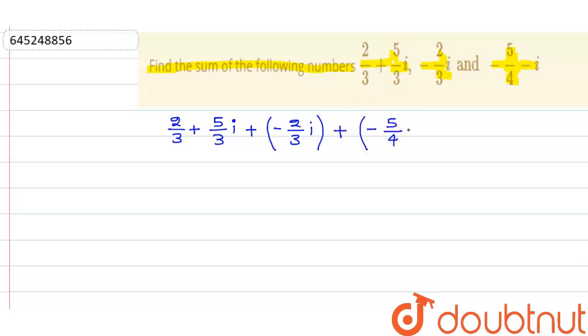Now add this thing. So this is what 2/3 plus take common iota. So this is what iota and this is what 5/3. This is what minus 2/3, here is minus of 1, and this thing is minus 5/4.